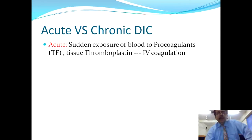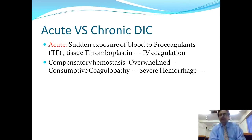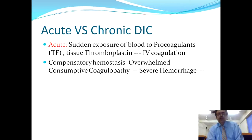There are two types: acute DIC and chronic DIC. In acute DIC there is sudden exposure of blood to pro-coagulants — the tissue factor, which is actually tissue thromboplastin — resulting in intravascular coagulation. The compensatory hemostasis is overwhelmed; the antagonism to coagulation is defeated, and therefore coagulation advances, with preponderant overwhelming coagulation. As a result there is consumptive coagulopathy which ultimately leads to severe hemorrhage.